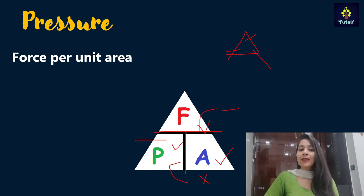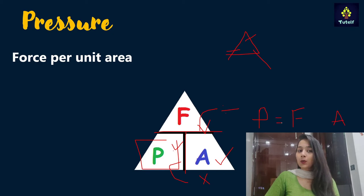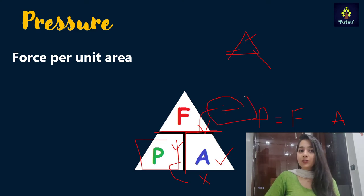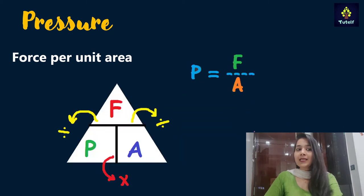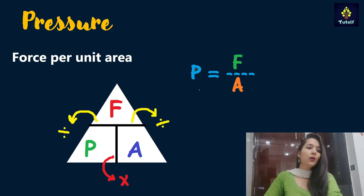For example, if I need to find the formula for pressure, I'll write pressure equals, and the line that comes between force and area represents division. So I get my formula: pressure equals force divided by area.